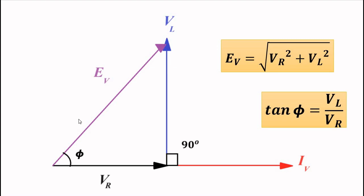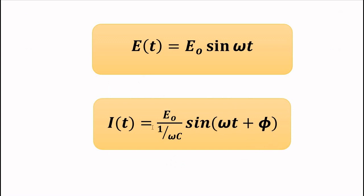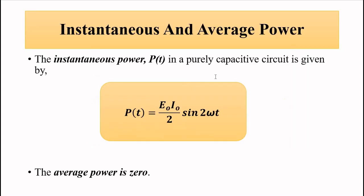For the RC circuit — resistor and capacitor in series — the current leads the voltage by an angle φ between 0 and 90 degrees. For a purely capacitive circuit, the instantaneous power is E₀I₀/2 × sin(2ωt) and the average power is 0. For an RC circuit, power will be somewhere in between these two values.